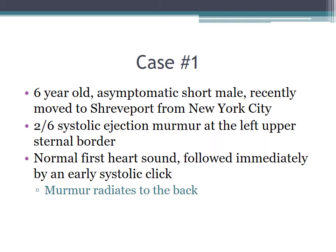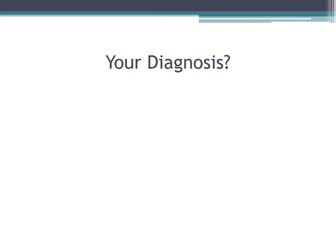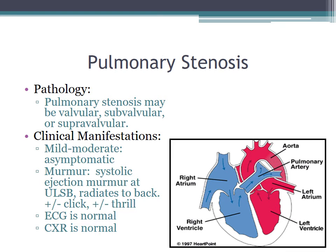Case one: a six-year-old asymptomatic short male with a two out of six systolic ejection murmur at the upper left sternal border, a normal first heart sound followed immediately by a systolic click, and the murmur radiates to the back. The pathology is pulmonary stenosis, which can be valvar, subvalvar, or supravalvar.